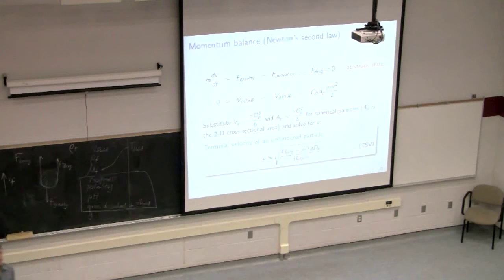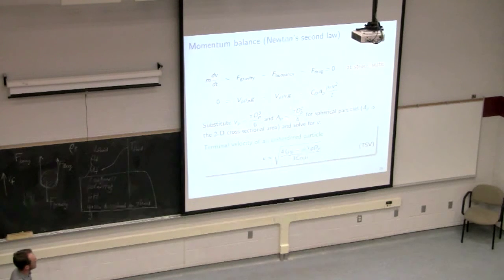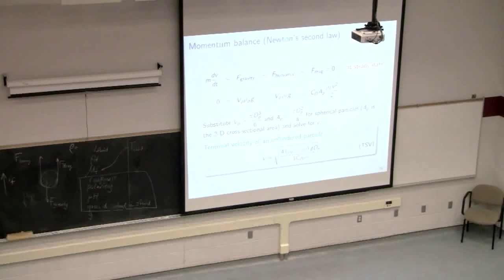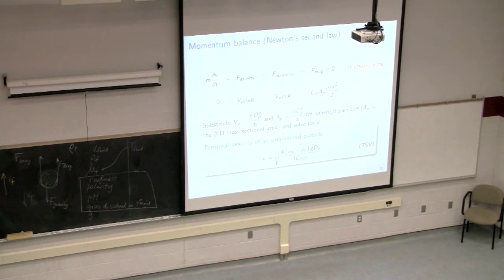Now we do a momentum balance. Setting the net momentum to zero at steady state and substituting in the volume and projected area expressions for a sphere, we can solve for V, the terminal settling velocity (VTSV). Terminal settling velocity is reached relatively quickly — particles initially accelerate and then reach VTSV and remain at that speed. We discount the short warm-up period.